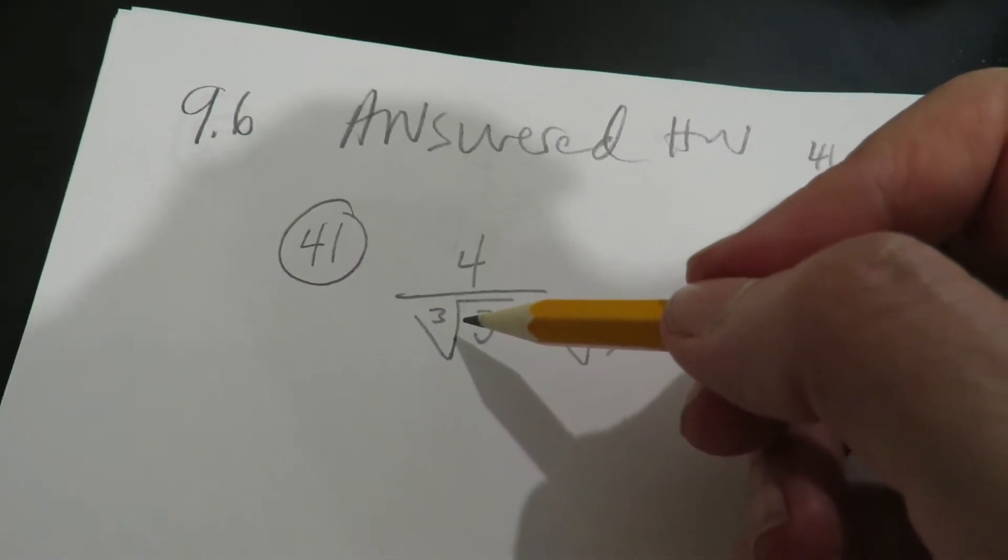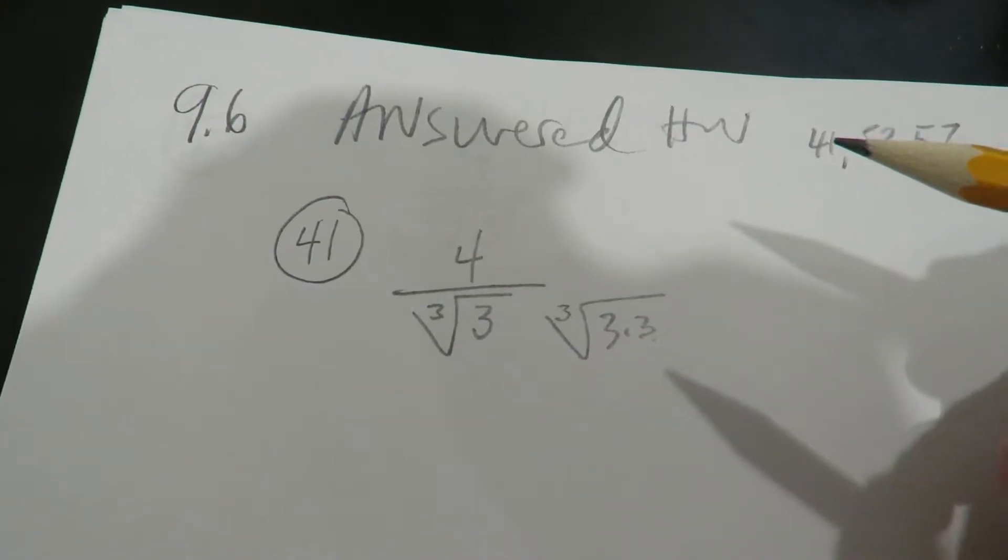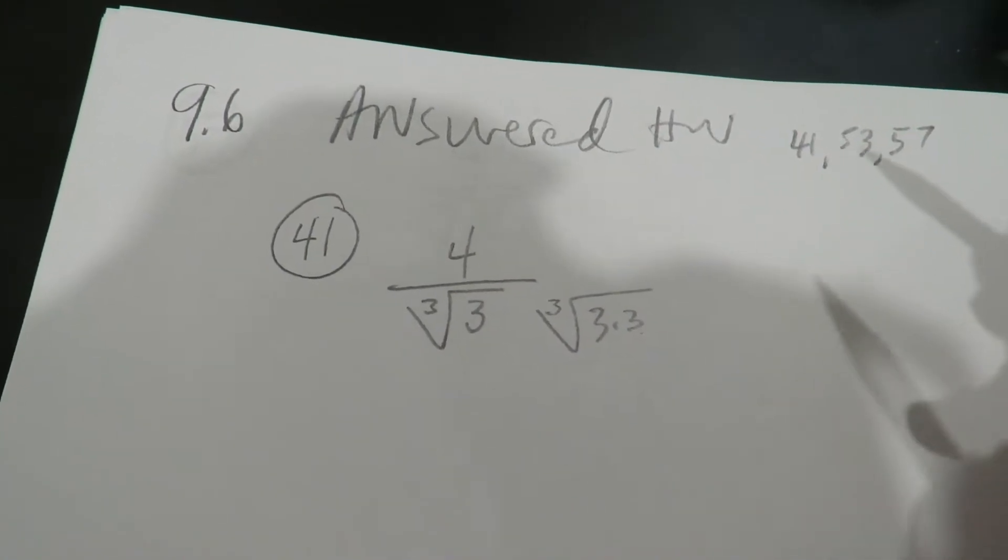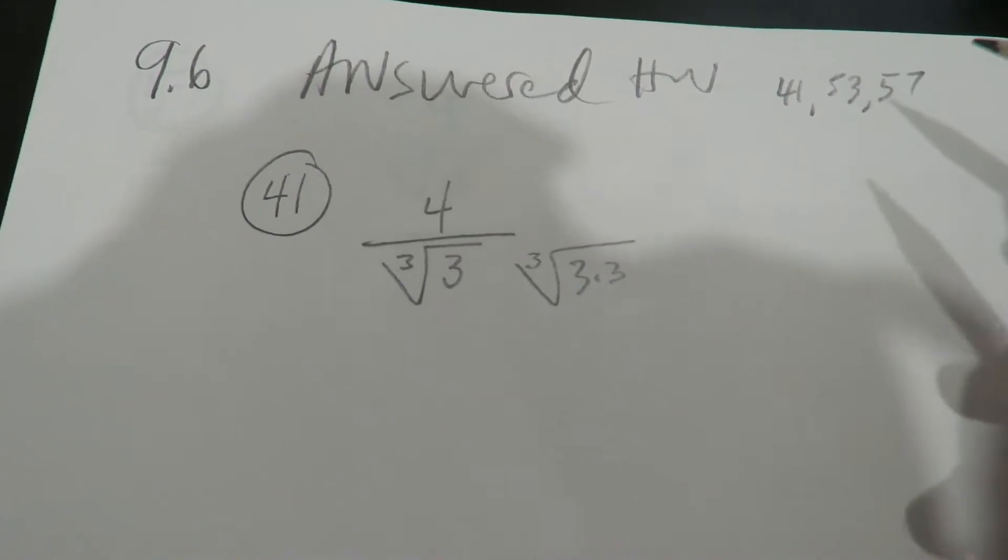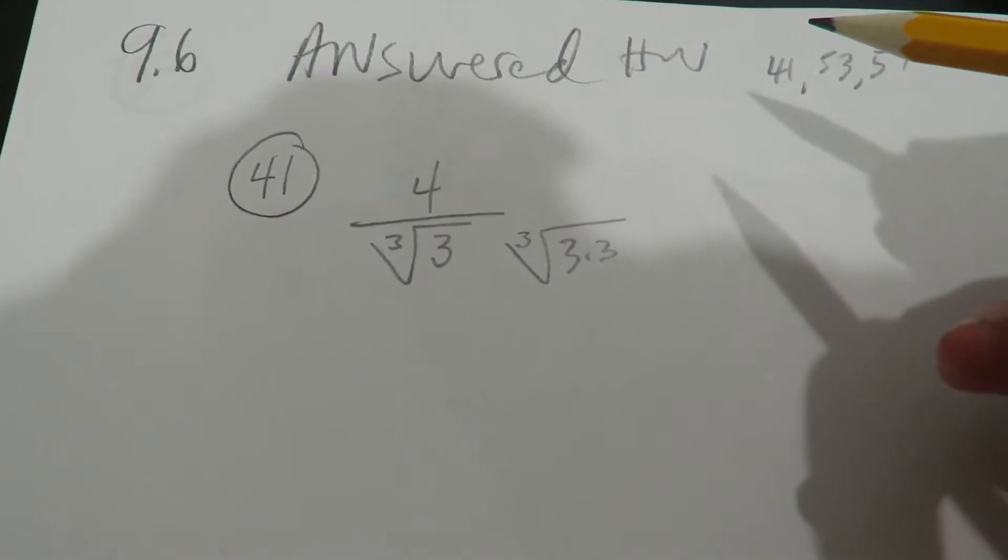So what makes something a perfect cube is that it has triplets or three of something. 3, 3, 3, 4, 4, 4, 5, 5, 5, 6, 6, 6. That's what makes perfect cubes in terms of numbers.